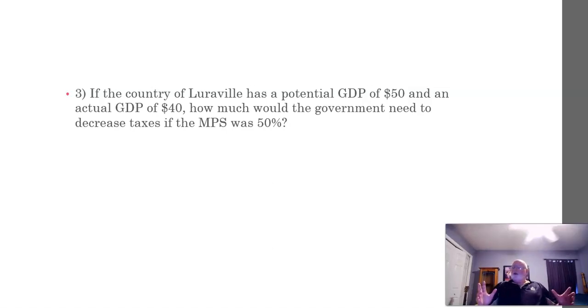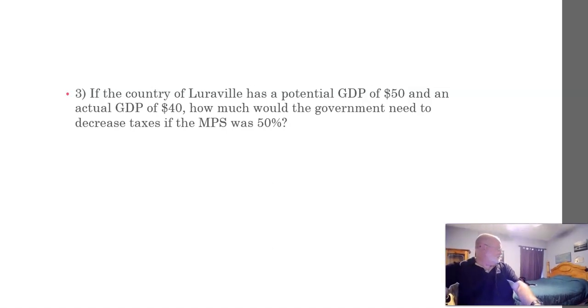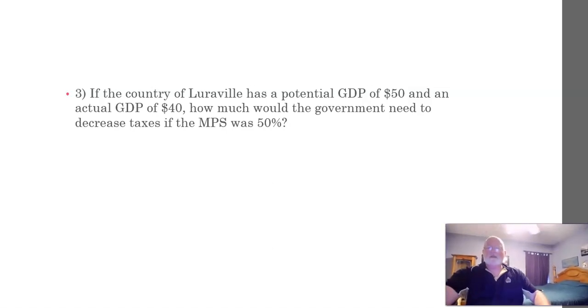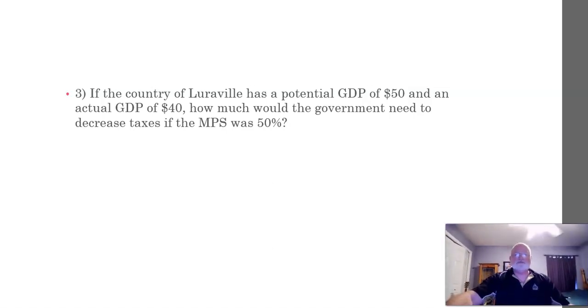So how much would the government need to decrease taxes if the MPS was 50%? Instead of increasing spending, we don't have enough money, so the government can increase spending or decrease taxes. In this case they've decided to decrease taxes. Remember, the decrease of taxes has a smaller effect than the increase in spending. Anyway, we got to figure out the multiplier. The spending multiplier is one over the MPS: one divided by 0.5 is two. But the tax multiplier is the spending multiplier minus one, so two minus one is one. They want to move the economy $10, so what number times one equals $10? The answer should be $10.